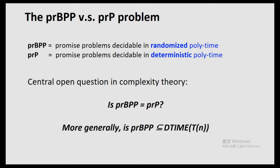In other words, can efficient randomized algorithms be simulated by an efficient deterministic algorithm? We can also ask more questions, such as: is BPP inside quasi-polynomial time? Is BPP inside sub-exponential time? And more generally, is BPP inside some deterministic time T for some function T?